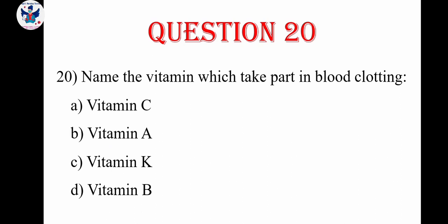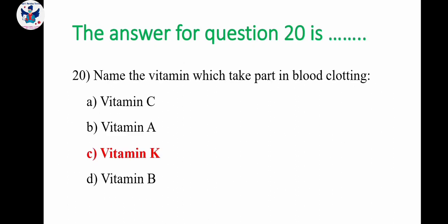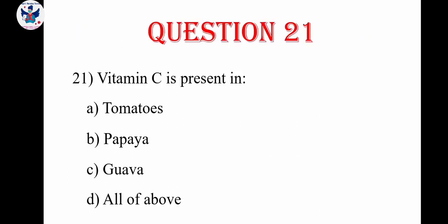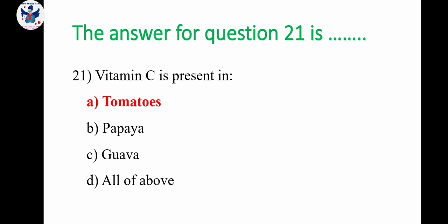Question number 20: name the vitamin which takes part in blood clotting — vitamin C, vitamin A, vitamin K, or vitamin B. The correct answer is vitamin K. Question number 21: vitamin C is present in — tomato, papaya, guava, all the above. The correct answer is all the above.